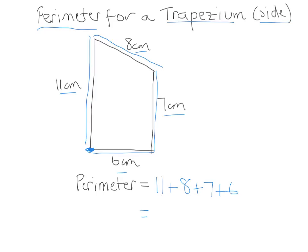So let's see, 11 plus 8 is 19 and 6 plus 7 is 13. 19 plus 13 is 32. So the perimeter of this trapezium is 32. I hope that helps. I'll see you in class.